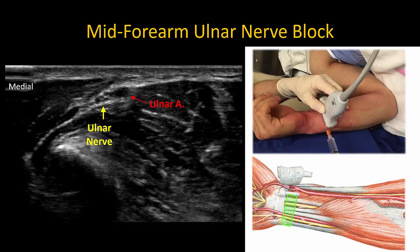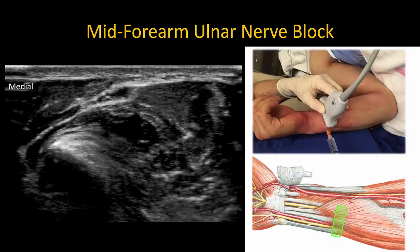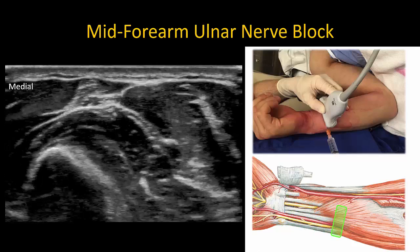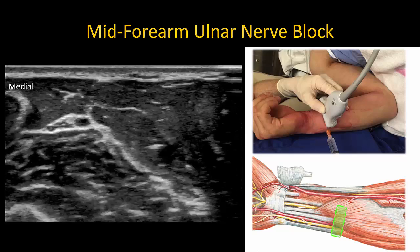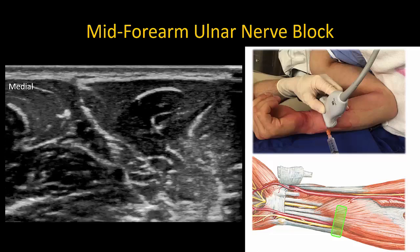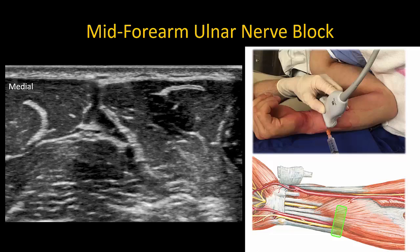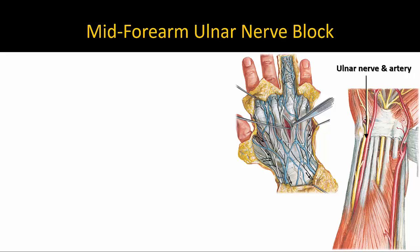With the arm in the same supinated position, the ulnar nerve is most easily identified by placing the probe close to the wrist crease over the ulnar artery. The ulnar nerve is always located immediately adjacent and medial to the artery. Both nerve and artery can be traced proximally to the upper forearm where they separate from each other. The nerve may be blocked anywhere in the lower half of the forearm as long as it is proximal to the takeoff of the dorsal cutaneous branch and the palmar cutaneous branch.